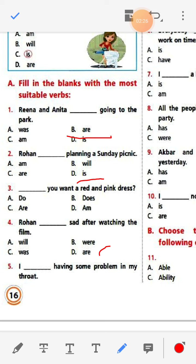Number three: Dash you want a red and pink dress? The options are do, does, are, am, but. Here only 'you' is there and it's a question (question mark at end), so: Do you want a red and pink dress?